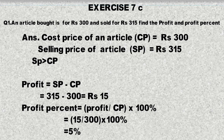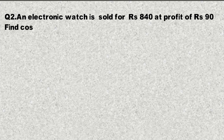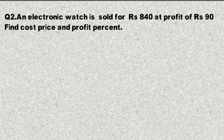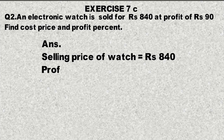Now many questions you have already done, so from here on you can calculate on your own — cancel the zeros yourself and show the direct answer. Question number 2: An electronics watch is sold for Rs. 840 at a profit of 90 rupees. Find the cost price and profit percentage. One electronics watch is sold for 840 rupees with a profit of 90 rupees.